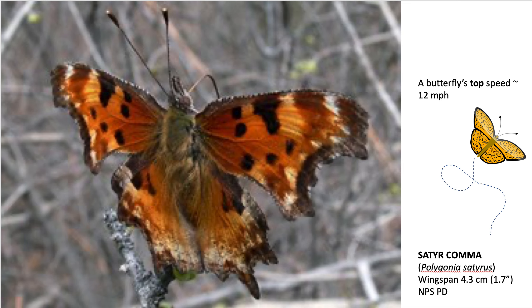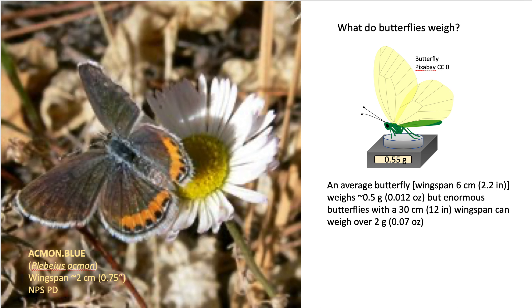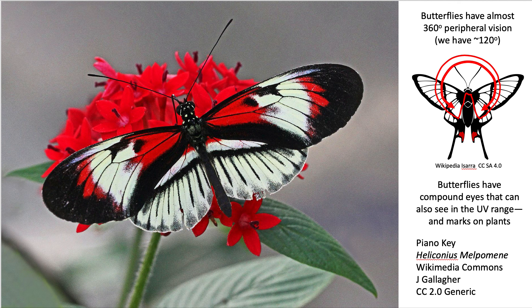The top speed of a butterfly is about 12 miles an hour — roughly bicycling speed, not race bicycling. As for weight, it's a difficult question, probably like asking what a human weighs given the wide range, but the average ones we see flying around weigh about half a gram — just over a hundredth of an ounce. Some large butterflies are still very light but can weigh over two grams, with a 30-centimeter (one-foot) wingspan.